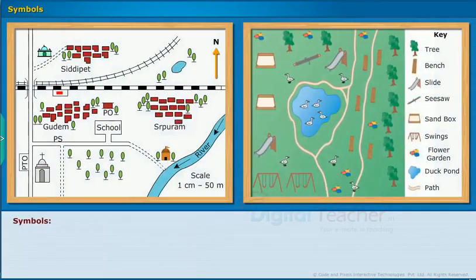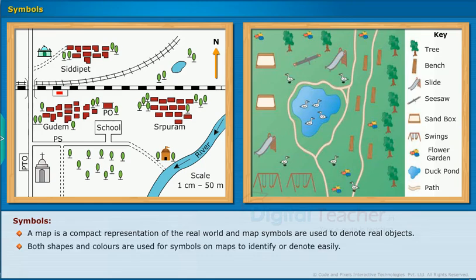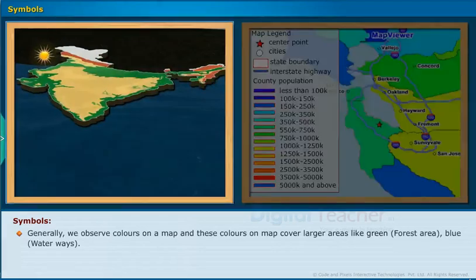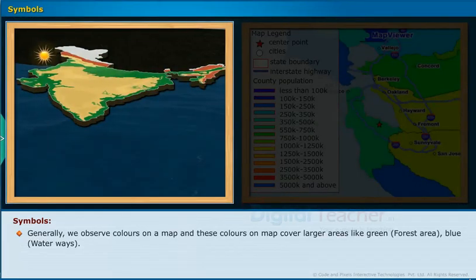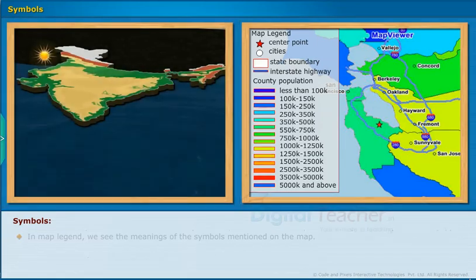Let us learn about symbols briefly. A map is a compact representation of the real world, and map symbols are used to denote real objects. Both shapes and colors are used for symbols on maps to identify or denote things easily. Colors on a map generally cover larger areas — for example, green for forest areas and blue for waterways. A person can understand a map clearly with the help of a map legend, which is the key to all the symbols used on the map. In the map legend, we see the meanings of the symbols mentioned on the map.